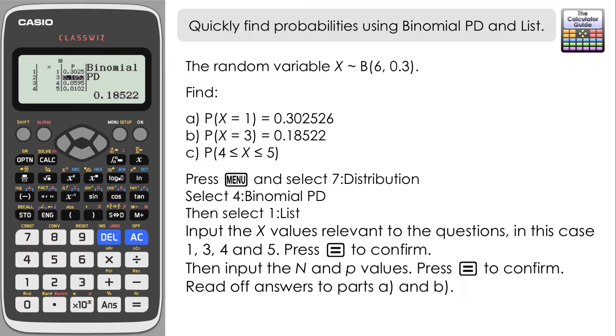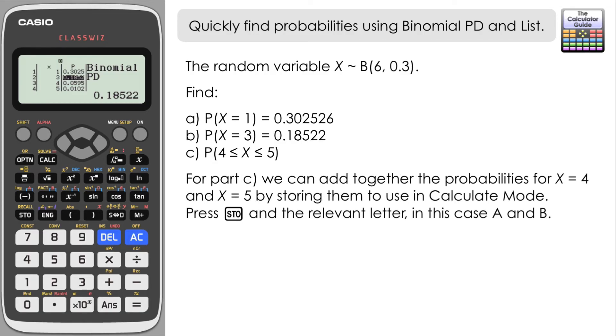Now if you remember, the probability of x being greater than or equal to 4, or less than or equal to 5, it was really the probability of x equaling 4 or 5 because of the discrete distribution. So what we can do to find that probability is that we can add the two values that we have here for 4 and 5 together, and that will give us a probability for part C.